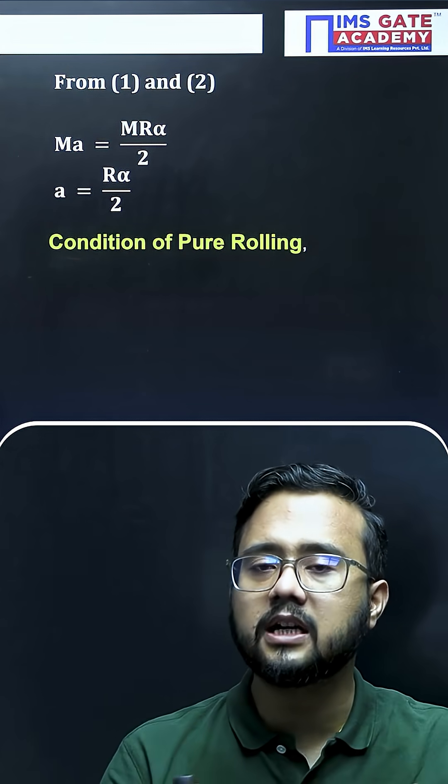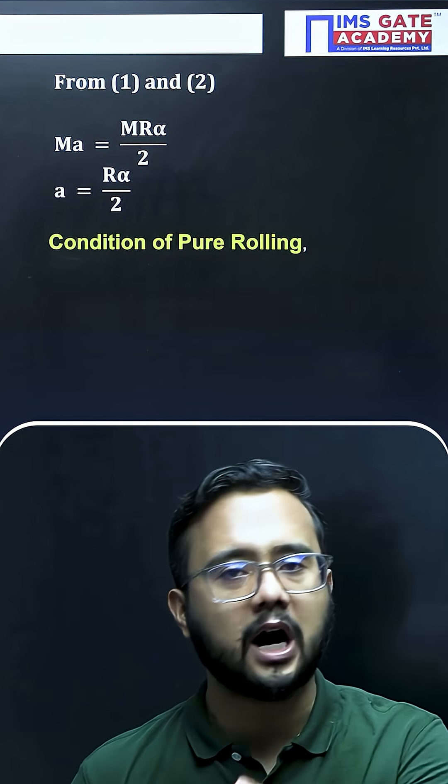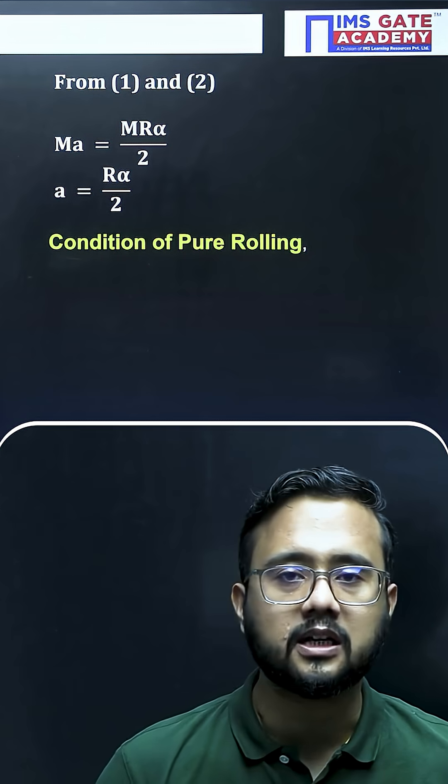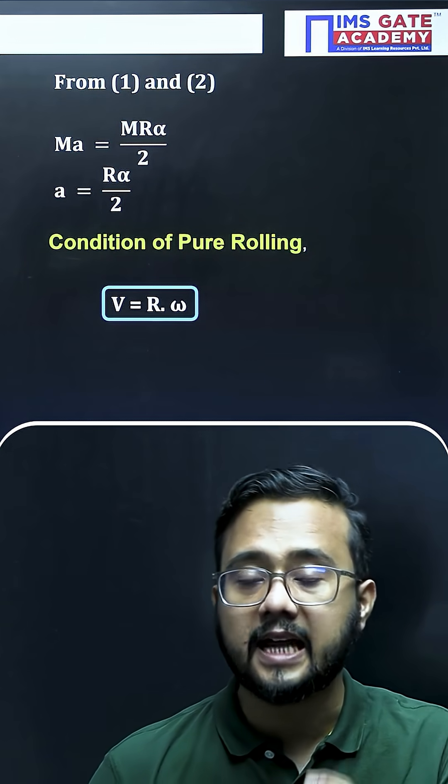Now using the condition of pure rolling, that is v equals to R omega. First of all we will talk about v, the linear velocity component and angular velocity component.